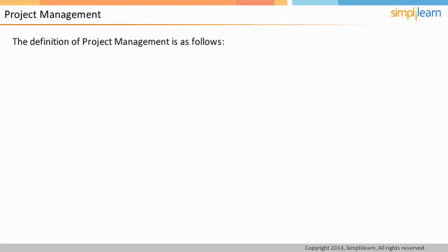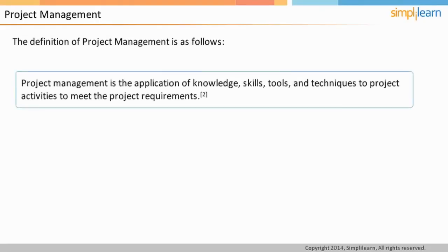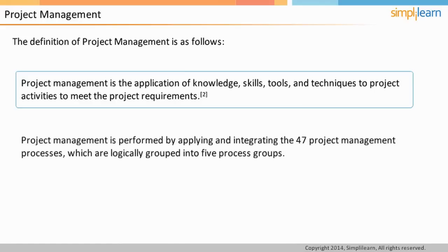As defined in the PMBOK Guide, project management is the application of knowledge, skills, and tools and techniques applied to project activities to meet the project requirements. Project management is achieved by proper application and integration of the 47 processes. Application and integration means these processes should be executed in the right manner as well as in the right order.